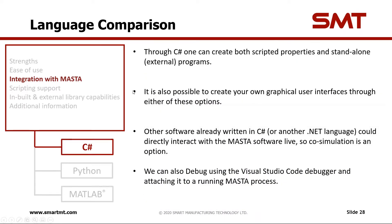Starting with C# integration — through C# you can create both external and internal scripts. It's possible to create your own graphical user interfaces through either of these options as well. There's an example on the SMT store called the analysis progress example, which is a script that simply runs all available analyses in MASTA and shows the progress. Other software already written in C# or another .NET language could directly interact with MASTA software live, so co-simulation is also an option. You can also debug using the Visual Studio Code debugger by attaching it to a running MASTA process.